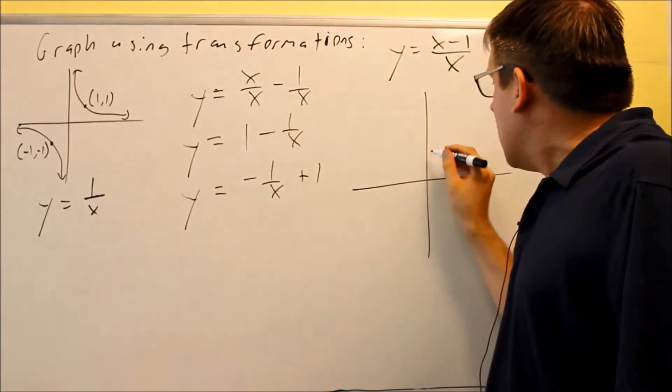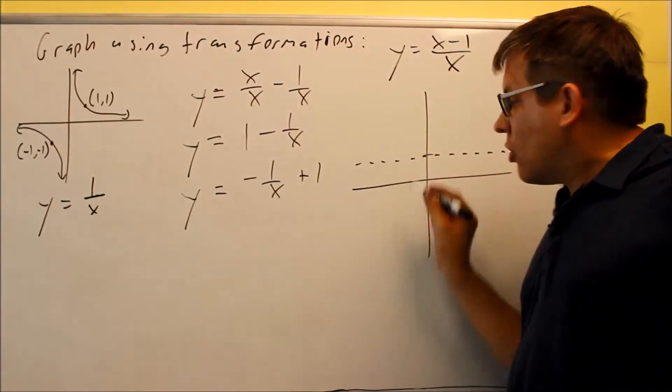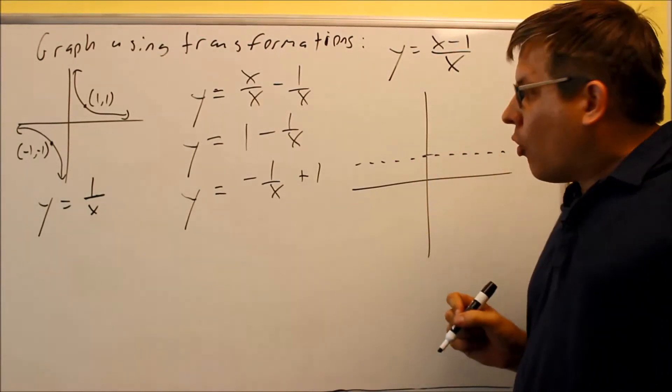Instead of the horizontal asymptote being at zero, it's actually going to move up to one. So one is going to be your new horizontal asymptote.